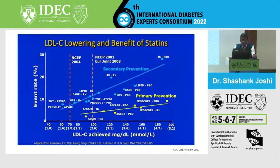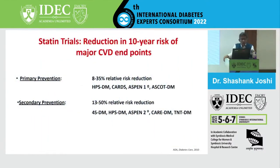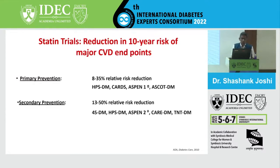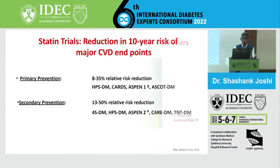Despite statinization of the world, we still see residual risk. On statin trials, on 10-year risk on major CVD endpoints, primary prevention shows around 8 to 35 percent relative risk reduction - summarized from HPS diabetes, CARDS, ASPEN-1 prime, and ASCORD diabetes. Secondary prevention shows 13 to 50 percent relative risk reduction from 4S, HPS, ASPEN, CARE, and TNT diabetes trials. Despite all this, there will be a residual risk which remains after statinization.